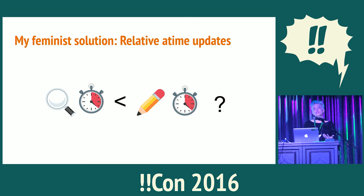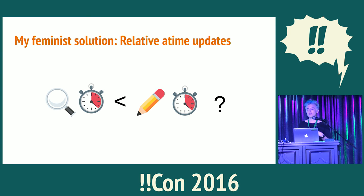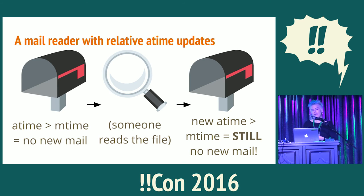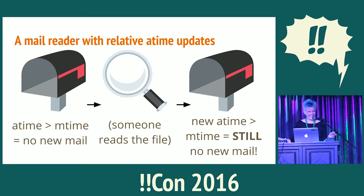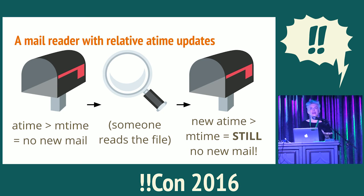This helped me come up with a solution I called relative A-Time. It just asks: what is the current A-Time on the file — is the time it was last read greater than or less than the current write time? If it's after the current write time, don't bother updating it. Don't send that write to disk. In the mail reader example, if A-Time is already greater than M-Time, there's no new mail. If I go read that file, there's still no new mail. It doesn't matter how many times you check your inbox — you don't have to write to disk.